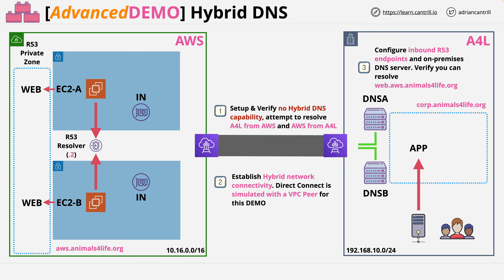The next stage of the demo lesson is to configure part one of the DNS integration — specifically to establish inbound integration from a DNS perspective. This means the simulated Animals for Life environment on the right can resolve DNS records stored on the DNS infrastructure inside the AWS environment on the left. To do that we need to create some inbound Route 53 endpoints and perform some configuration updates within the DNS infrastructure on the right.